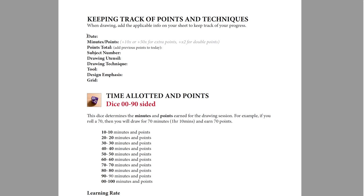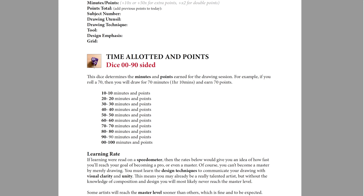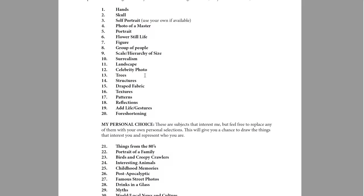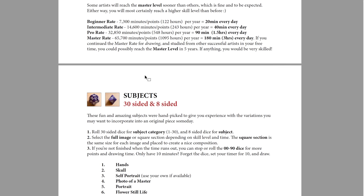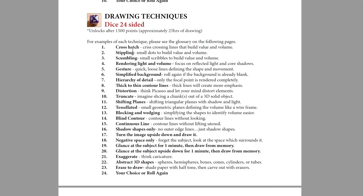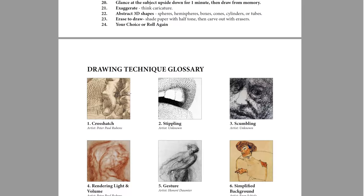Each dice is explained for what it's used for. I have 30 different categories of subjects and 8 different subjects in each category — that'll definitely keep you busy, and even if you roll the same subject, you can draw it again, or the rules will tell you what else you can do. You've got different drawing utensils to unlock and different drawing techniques like crosshatch, stippling, scumbling, rendering light and volume, hierarchy of detail, distortion, truncation. There's also a glossary you can thumb through to get an idea of each technique.